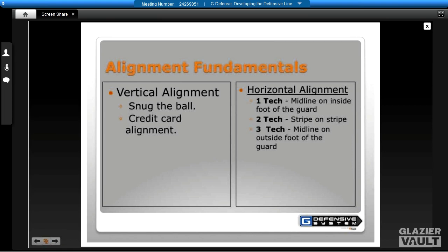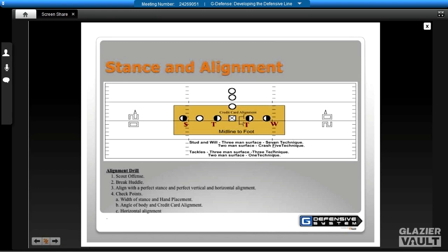Our horizontal alignment for our tackles: a one technique is the middle of the inside foot of the guard, a two technique is stripe on stripe, and a three technique is the midline of our body on the outside for the guard. What we tell our kids is we want to bisect the guard with the midline or your manhood. Split it right down the middle. Here's the key: if their splits are tighter, we're going to play heavier to the man. And if their splits are wide, we are going to shade more to the gap and be a little bit looser.